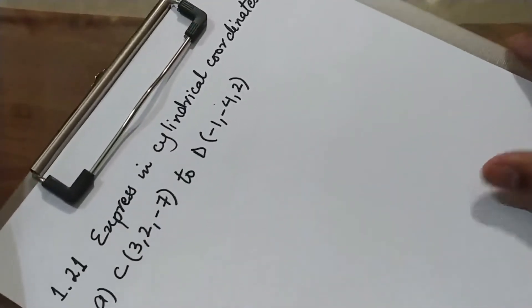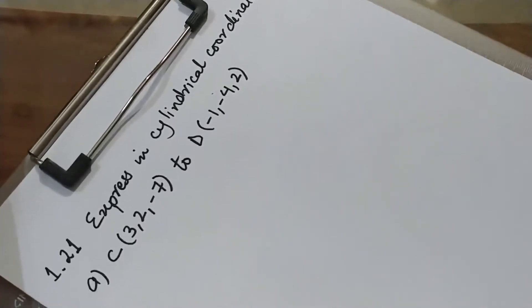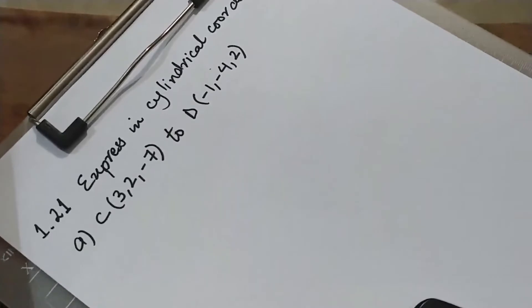I want to elaborate on the problem because a few students are asking that their value of phi is not the same as what we got in our live sessions. This was a problem where we had to express in cylindrical coordinate system a vector which starts from C and terminates at D.